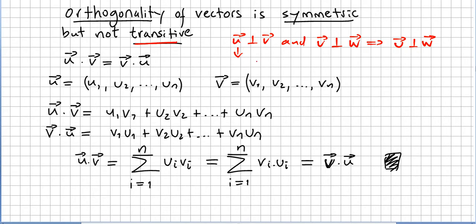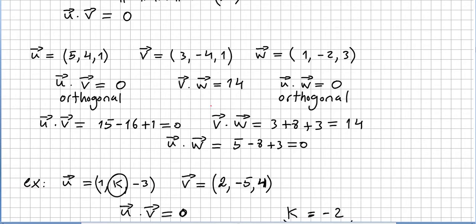We saw this example in a previous video. Let u = (5, 4, 1), v = (3, -4, 1), and w = (1, -2, 3). So u is orthogonal to v, and u is orthogonal to w, but that doesn't mean that v is orthogonal to w.